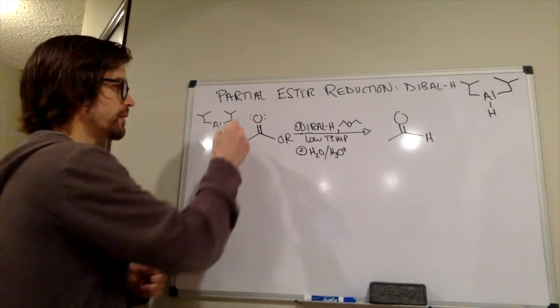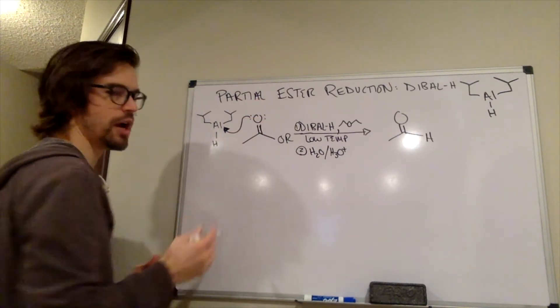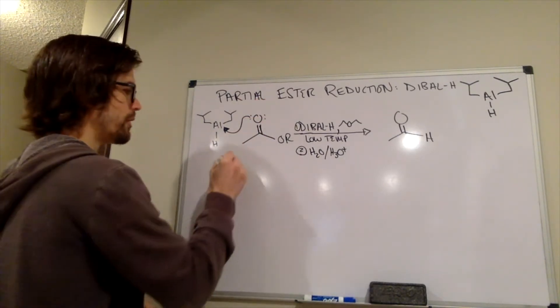The most partially negative component of this is going to be this oxygen up here. And essentially, the first step in this reaction, the partial negative on that oxygen is attracted to the partial positive of that aluminum.